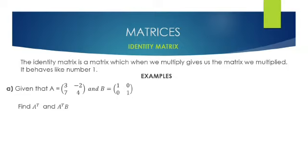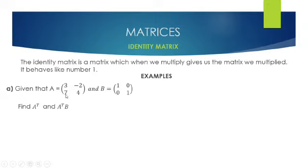In example A, we're given that A is equal to this matrix and B is equal to this matrix. This is just a normal matrix but B is an identity matrix. We're asked to find the transpose of A, and then after we find the transpose of A, we're supposed to multiply that transpose by B. The transpose of A is simply found by making the rows of A into columns, hence the transpose of A will be equal to this matrix.